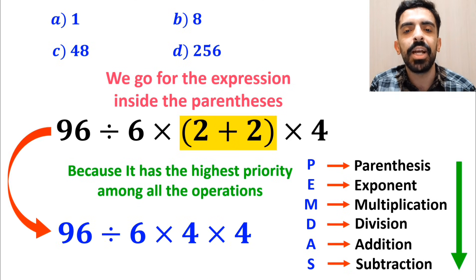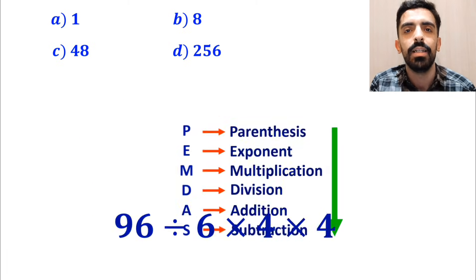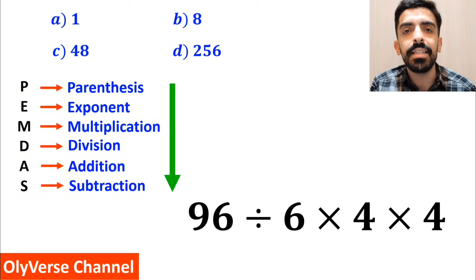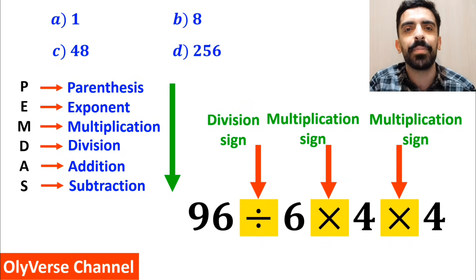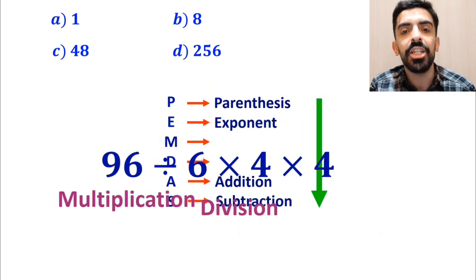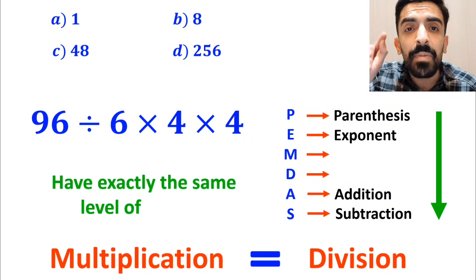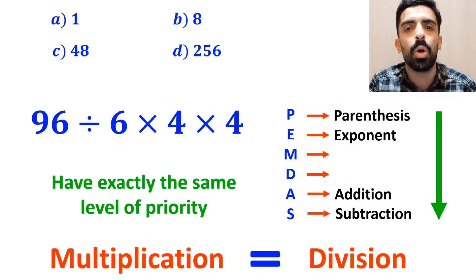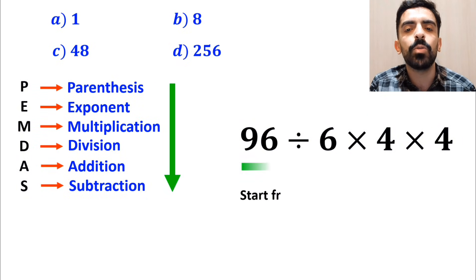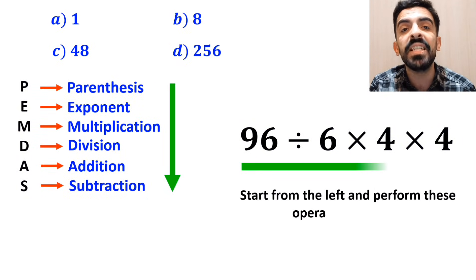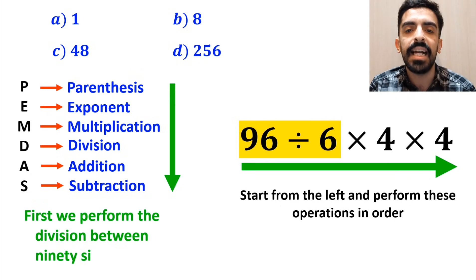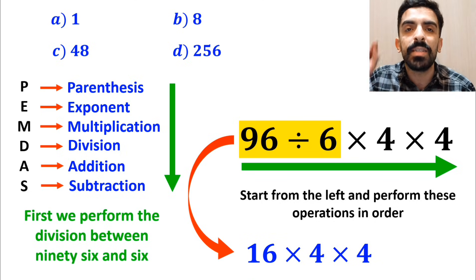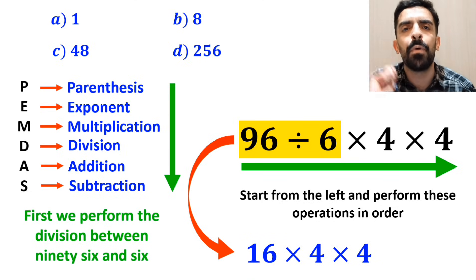So instead of the original expression we can write 96 divided by 6 times 4 and again times 4. As you can see on the screen, in this expression we have one division sign followed by two multiplication signs. We must pay close attention that multiplication and division have exactly the same level of priority in the PEMDAS rule. In this situation the best thing to do is to start from the left and perform these two operations in order. So first we perform the division between 96 and 6, which simplifies this expression to 16 multiplied by 4 and again multiplied by 4.